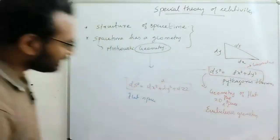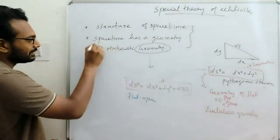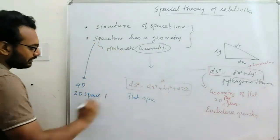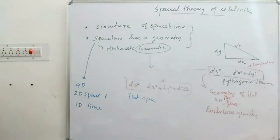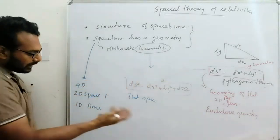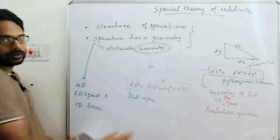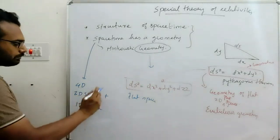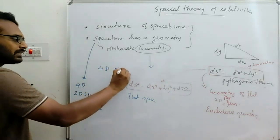Spacetime has a specific geometry with a similar equation. Spacetime is four-dimensional — it has three dimensions of space and one dimension of time. In four-dimensional space we can see a similar relation for the distance between two points. This four-dimensional space is called spacetime, or we can simply call it four-dimensional Minkowski space.